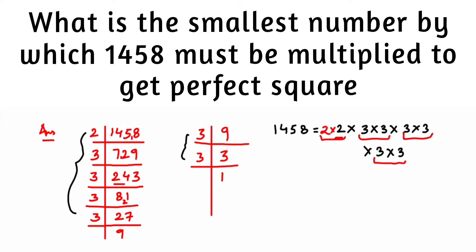If you're multiplying on the right hand side, you should multiply on the left hand side also, along with 1458. So 2 into 1458 will be nothing but 2916.